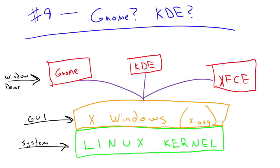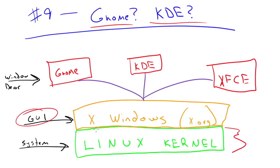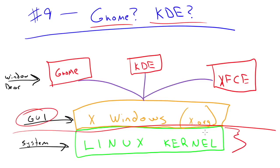Number 9: GNOME, KDE — what on earth are these things? When you install a distribution, you get offered the option of installing GNOME or KDE. Linux itself is just a text-based kernel — the underlying operating system that functions whether or not you have a graphical interface. The graphical interface, or GUI, is called XWindows, which is like a program or a layer that sits on top of Linux. X.org is the name for the windowing system.